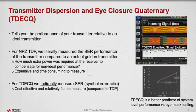So what is TDEC-Q? It essentially tells you the performance of your transmitter relative to an ideal transmitter. Going back to the NRZ TDP measurement, this is a BER-based measurement where we compared the performance of your transmitter with that of an ideal or golden transmitter — a BERT. We looked at how much additional power was required at the receiver to compensate for non-ideal performance, and that difference was the TDP value. Because it required quite a bit of test equipment and was a BER-based measurement, it was fairly expensive and time-consuming to perform.